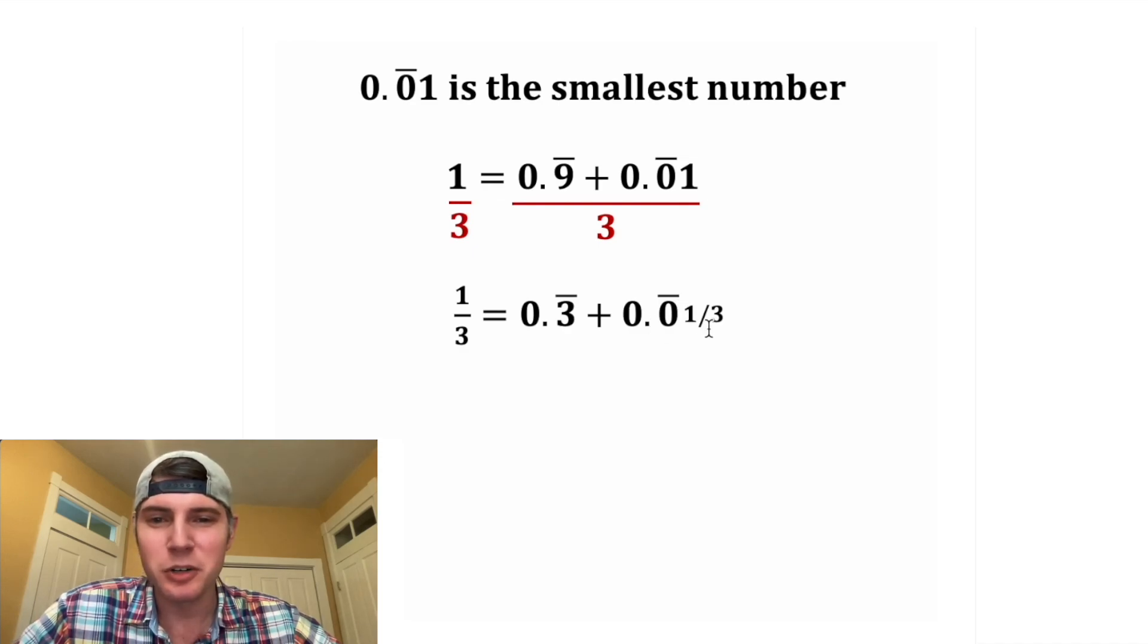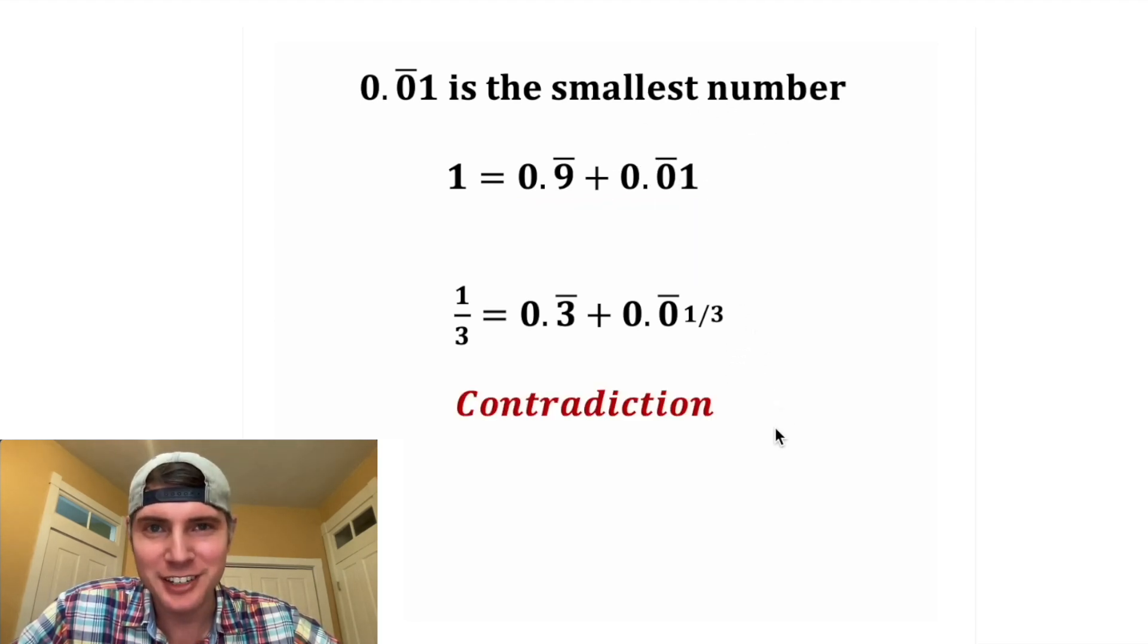Well, this 0.0 recurring one third can't exist, because we already said this was the smallest possible number. So now we've hit a contradiction, because we can't have something smaller than the smallest number.